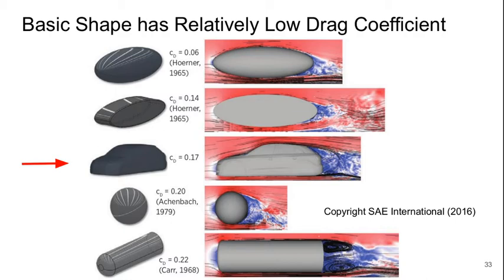Here are some shapes for reference. We have an ellipsoid with a CD of 0.06. A 2D version of that ellipsoid is 0.14. This sort of hatchback-type shape is only a little worse at 0.17 — it's better than a sphere, and much better than a cylinder with a blunt trailing edge.